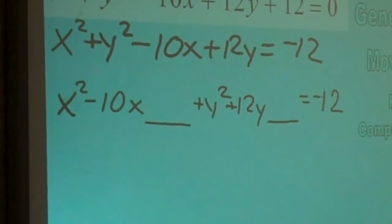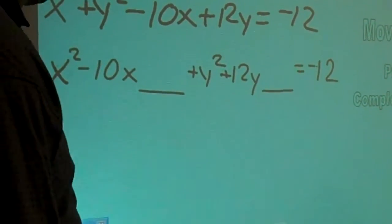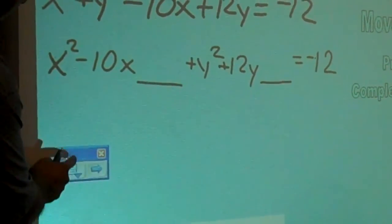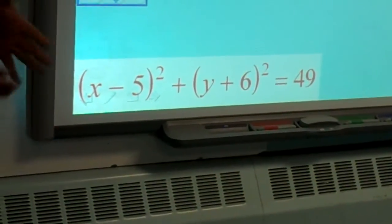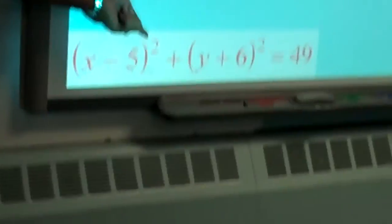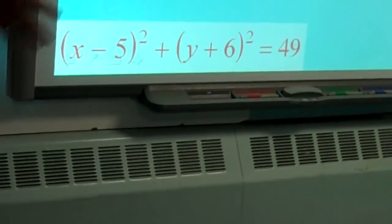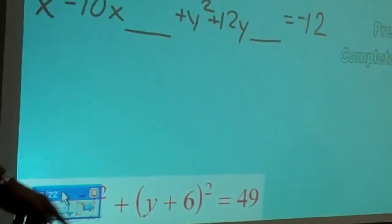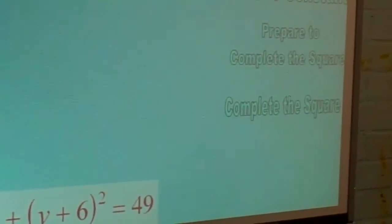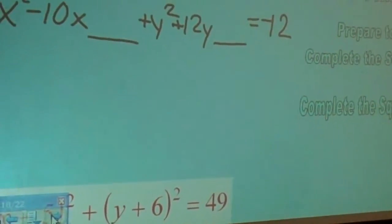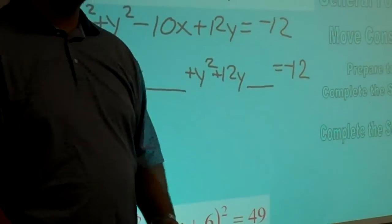So we are now ready to complete the square. Now what that means exactly you're going to see. Our goal is to make it look like this. What I mean to complete the squares is that I'm trying to get these squares here. So I'm going to try to complete the squares. Now we're going to complete the squares. So we've prepared it to complete the square. And we need to figure out what goes here and here to complete the squares.